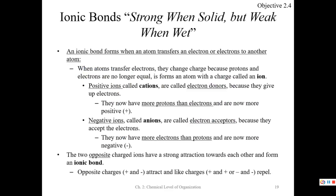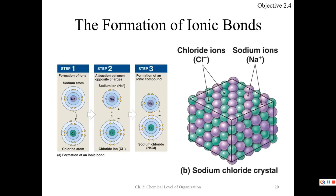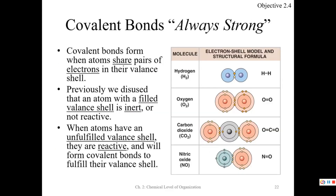Ionic bonds dissociate or break in the presence of water. Now, with covalent bonds, if you have atoms that have unfulfilled valence shells, they will form bonds. They have to be reactive, and they will share electrons between each other to fill themselves up. They're like people who, in order to be happy, have to be in a relationship.